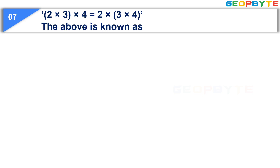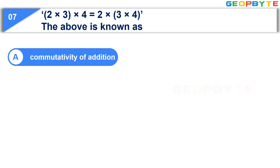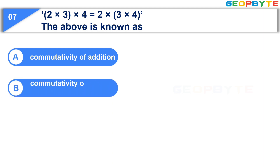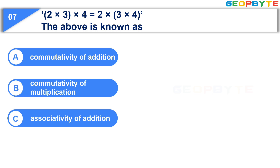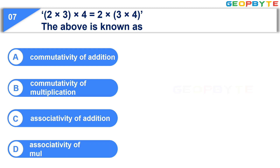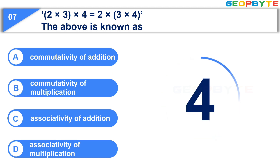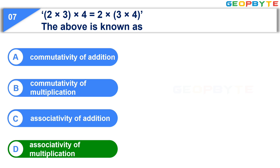Now let us see the seventh question. 2 × (3 × 4) is equal to (2 × 3) × 4. The above is known as. Option A: Commutativity of addition. Option B: Commutativity of multiplication. Your time starts now. Your time is up and the correct answer is Option D, associativity of multiplication.